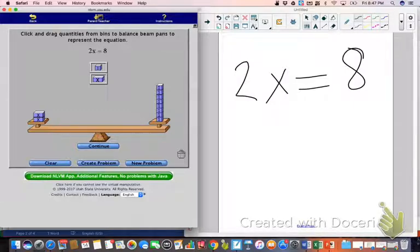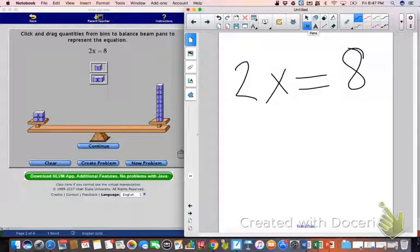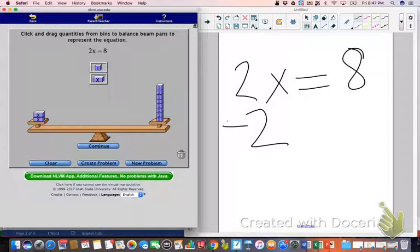We can't just subtract. And I am getting ready to do something wrong right now. A lot of people think that to get rid of this 2 that is with the x, you would simply subtract 2 from that side of your equation. But here's the problem. 2 is not the same thing as two x's. We don't have two that we can take away over here on the left side of our balance beam.